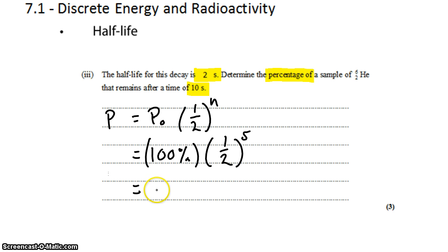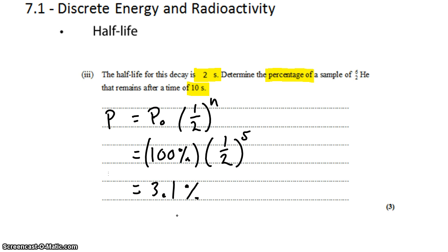Punch that into your calculator, and you get about 3.1%. That means 3.1% of the sample remains, or 96.9% of the sample has decayed.